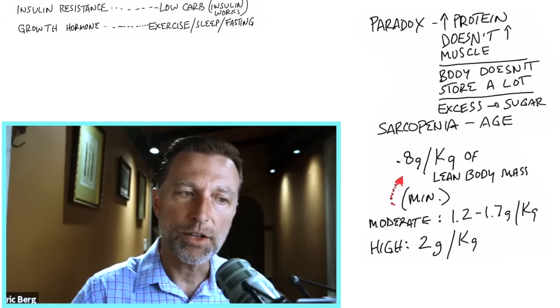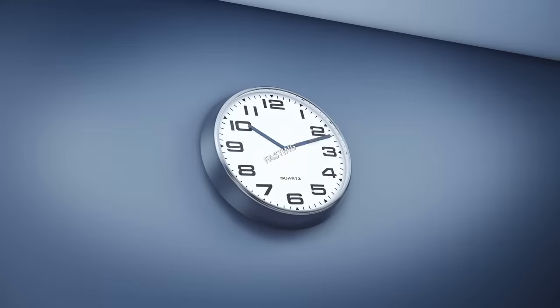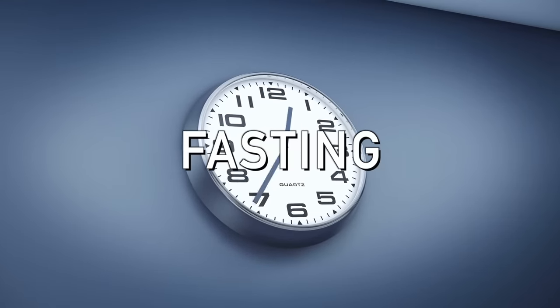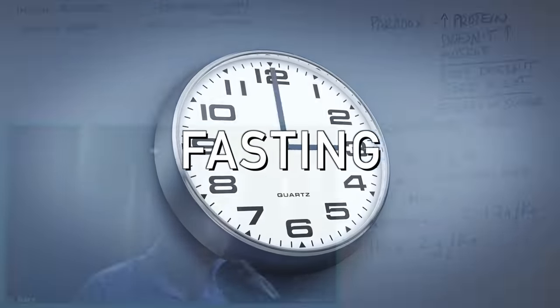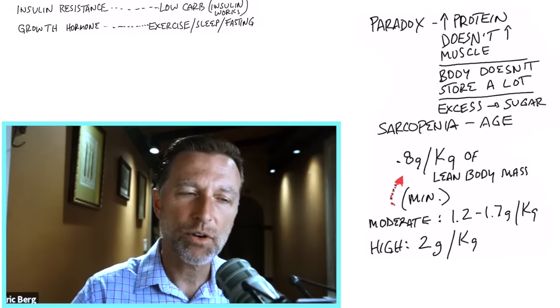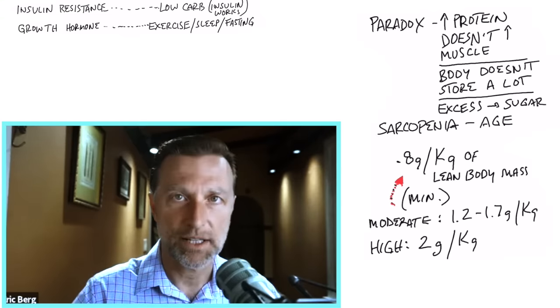Now, another thing that you can do to increase growth hormone is fasting. Fasting and not snacking so frequently. So fasting can increase growth hormone. And if you're trying to build muscle, I would just do intermittent fasting. Intermittent fasting, not eat so frequently.